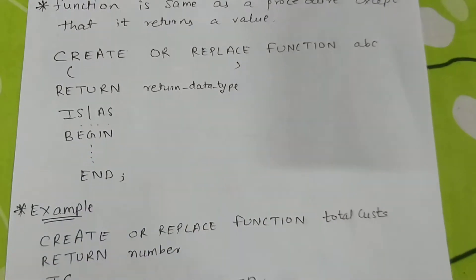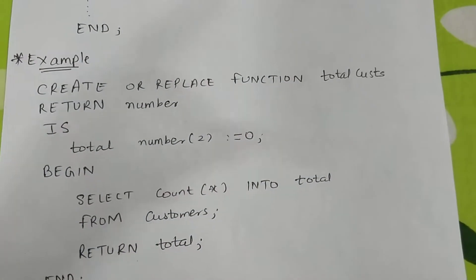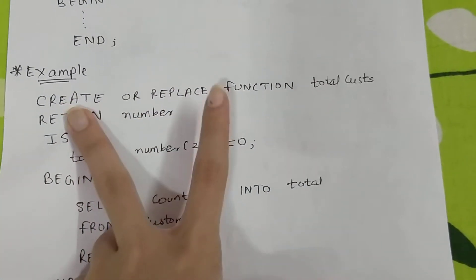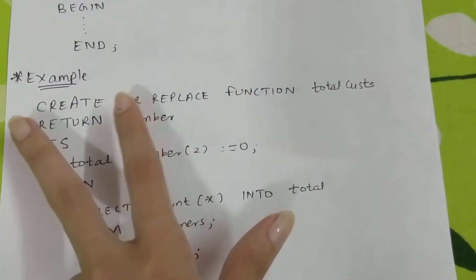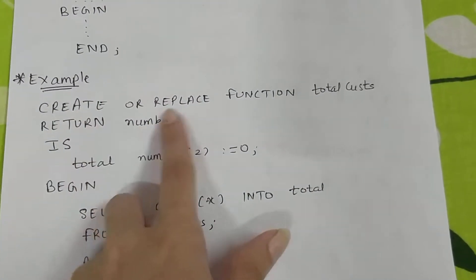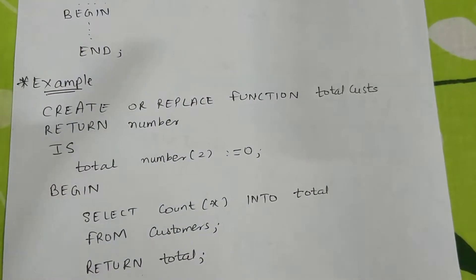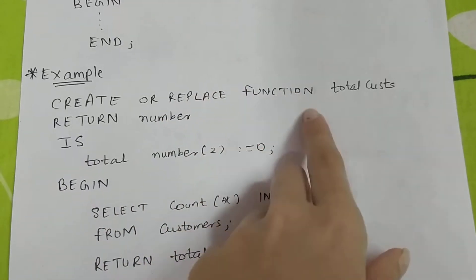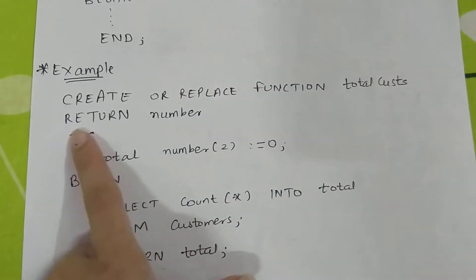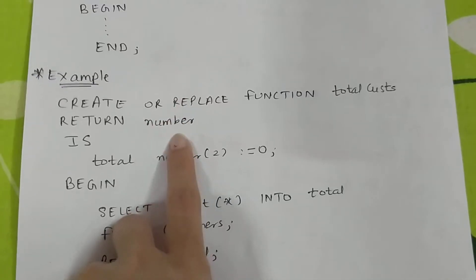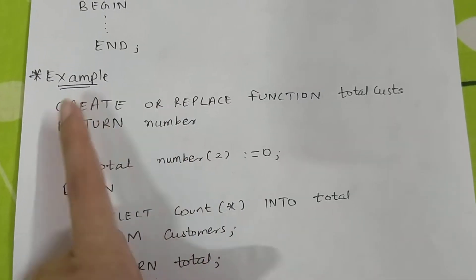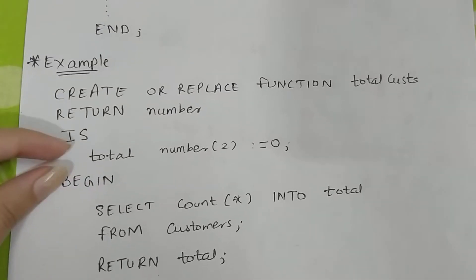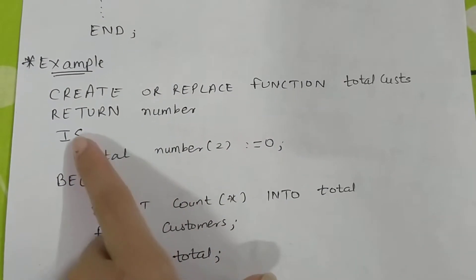Here is an example function: CREATE OR REPLACE FUNCTION total_cars. You can also write CREATE FUNCTION, but CREATE OR REPLACE is used when you want to modify an already existing function. The function is named total_cars, and after RETURN you write NUMBER — that is the data type of the returned value. Then IS begins the declaration section.